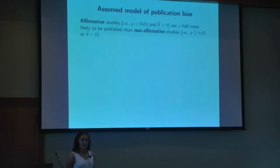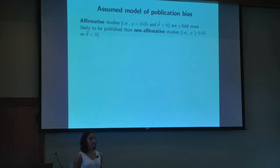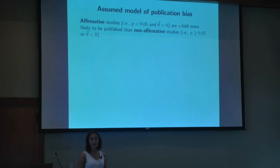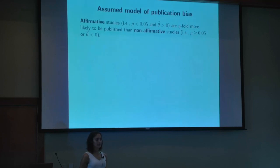To formalize the model of publication bias, we're thinking of a world in which there are two types of studies: affirmative and non-affirmative. Affirmative studies are those with statistically significant p-values and positive results; non-affirmative studies are those with either non-significant results or negative point estimates. We consider that affirmative results are more likely to get published than non-affirmative results by some unknown ratio — let's call it eta.